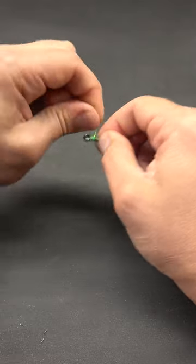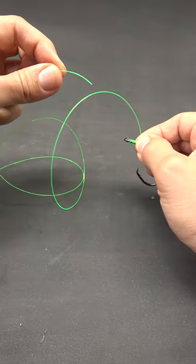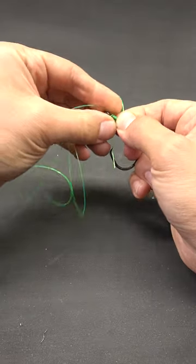then make some tight wraps down the shank of the hook. Now take the opposite end of your leader, stick it through at the back side of the eye of the hook, and pull tight.